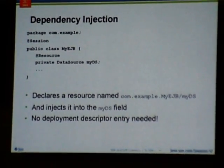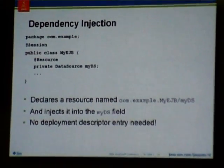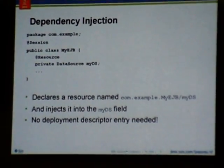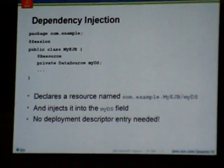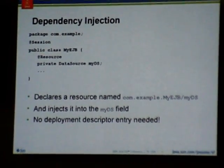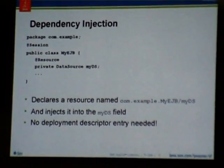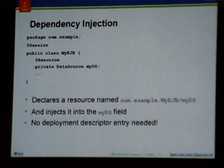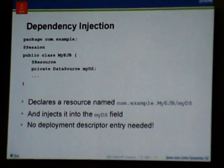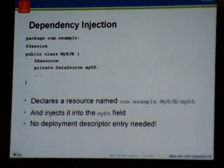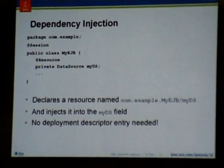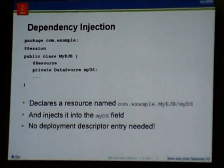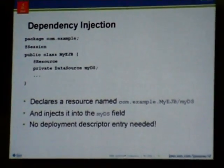In this example, this is going to cause it to declare a resource named com.example.myEJB.myDS. That will be the JNDI name of our resource. The container will inject this resource into the MyDS field, and we don't need any deployment descriptor entry at all with this.